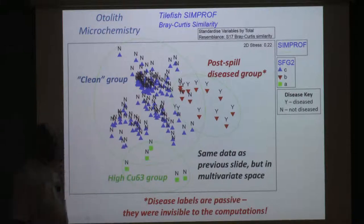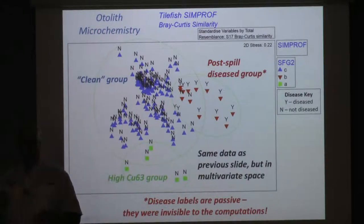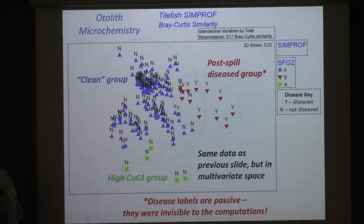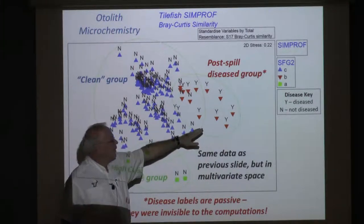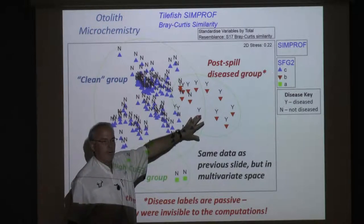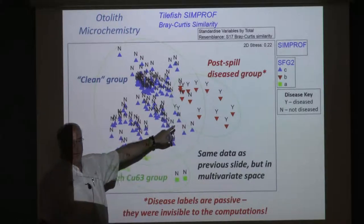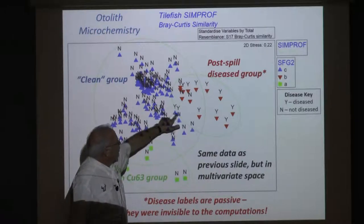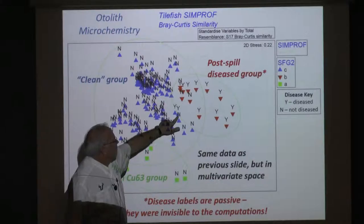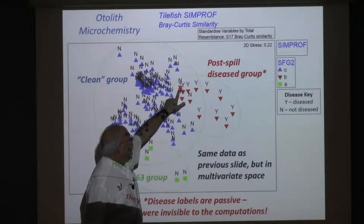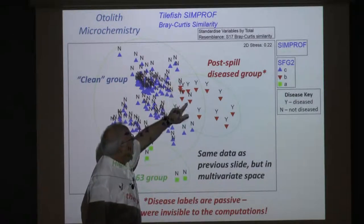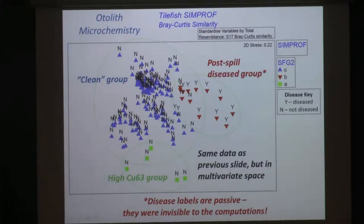Here's a re-plotting of the same data where each symbol equates to one of those columns and the groups are circled. The so-called clean group actually has a couple of subgroups — those vanadium and chromium fish — with the true clean area here, the high copper group here, and the nickel-and-zinc group here. Superimposed passively are letters indicating whether the fish had visible disease — fin rot, lesions, too many parasites — marked with a Y. That nickel-and-zinc group was dominated by diseased fish, and even the two diseased fish adjacent to it were very close in multidimensional space to the diseased group.